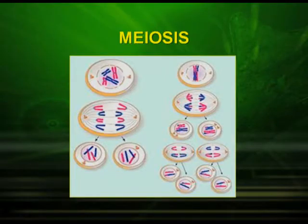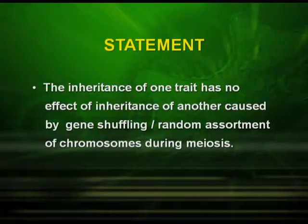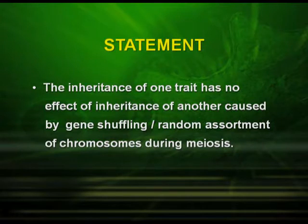So, what Mendel concluded was that inheritance is independent and there is random assortment of chromosomes — that means random alignment of chromosomes during meiosis. This can be very well understood with the help of meiosis, where there is a separation of homologous chromosomes during metaphase and anaphase. The law of independent assortment states that the inheritance of one trait has no effect on the inheritance of another, caused by genes undergoing random assortment of chromosomes during meiosis.